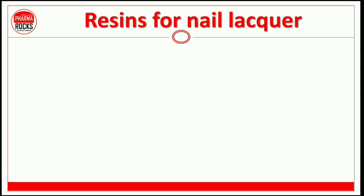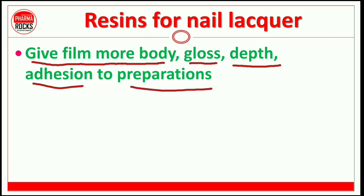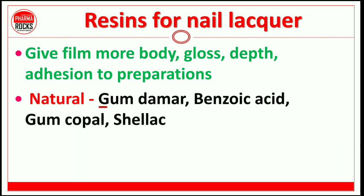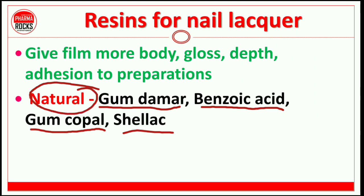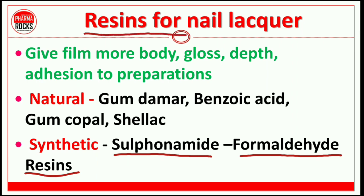After that, resins for nail lacquer: the main role of resin material is to give the film more body, gloss, and depth in addition to the preparation. The film forming polymer's adhesion to the nail surface is improved by adding resinous material. Natural resinous materials used include gum damar, benzoic acid, gum copal, and shellac. Synthetic materials include sulfonamide formaldehyde resins.